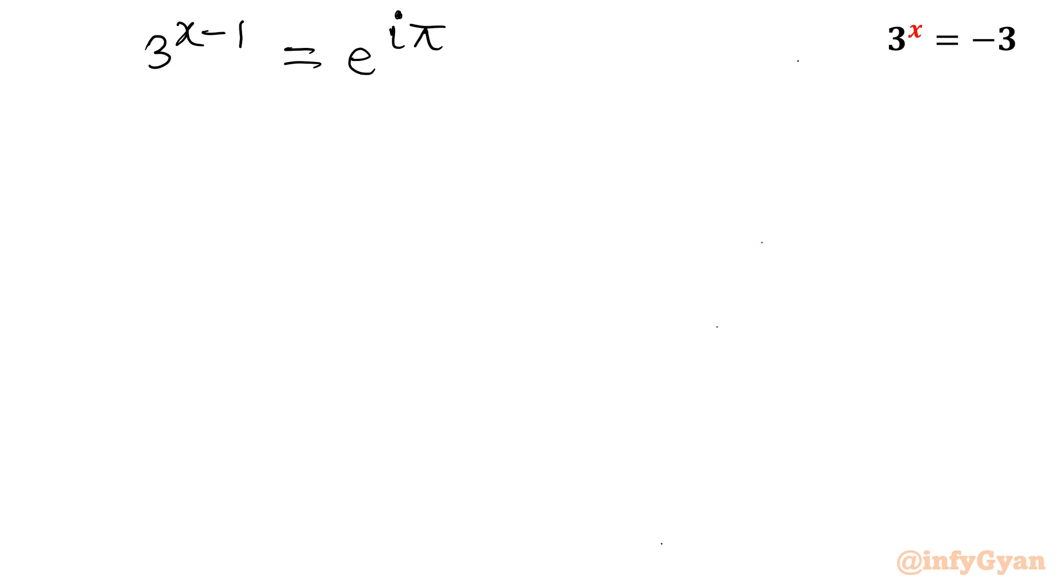Now let's generalize this. How we will generalize? In place of exactly i pi, I would write pi plus 2n pi, where n belongs to integer. Let's take pi common: e raised to the power i pi times 1 plus 2n, which is equal to 3 power x minus 1.